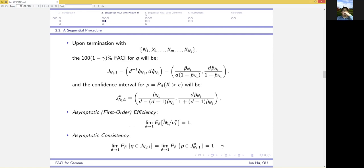The asymptotic efficiency says that as d goes to 1, the expected value of n1 over n1 star tends to 1. And the asymptotic consistency says the coverage probability approaches 1 minus gamma, which is the target.